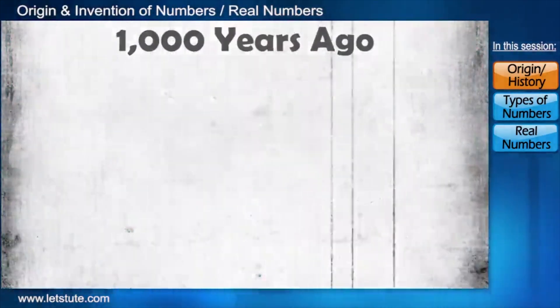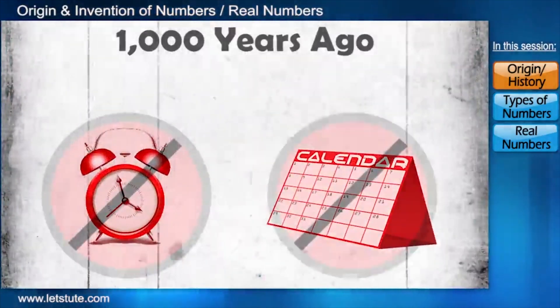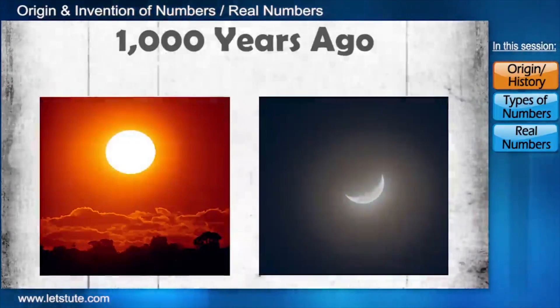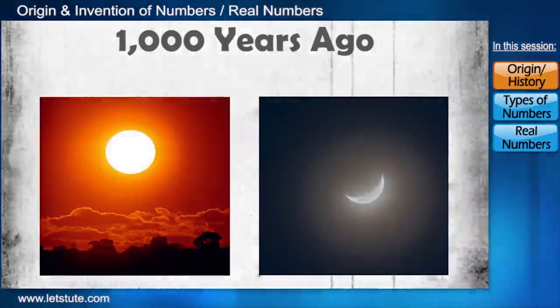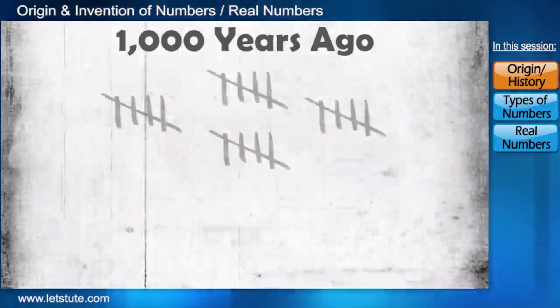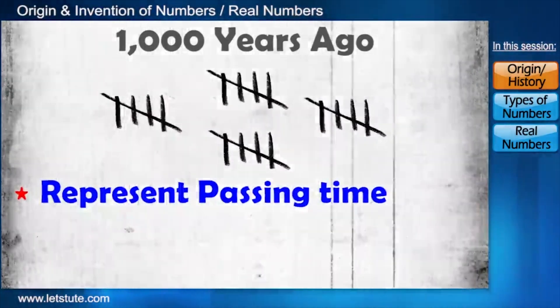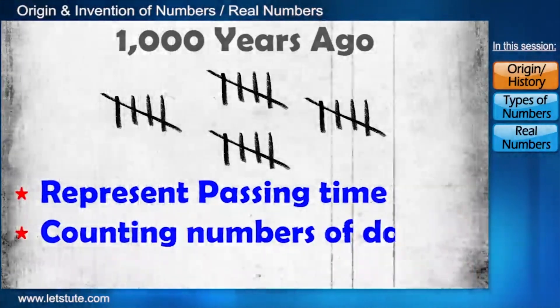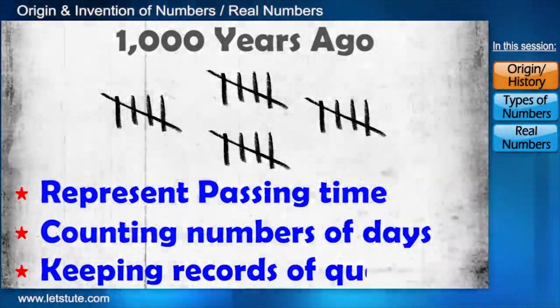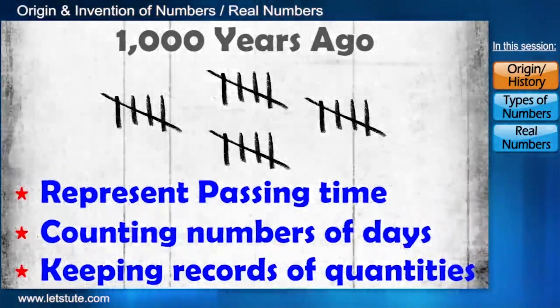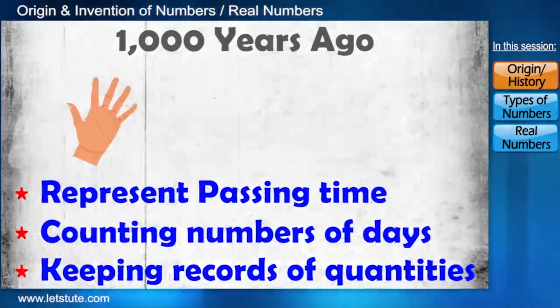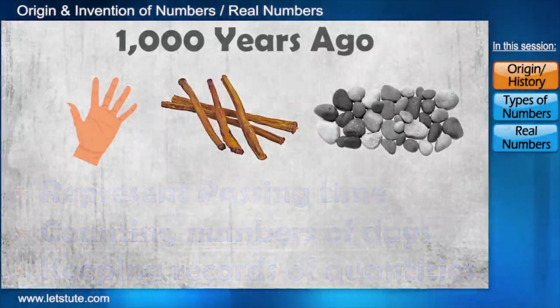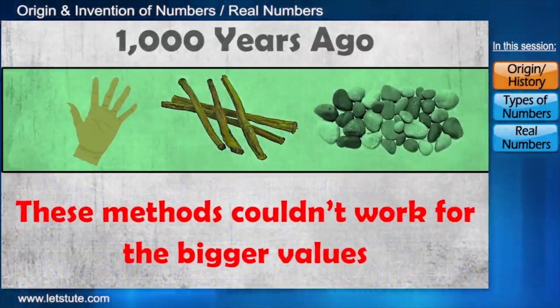Thousands of years ago, there were neither clocks nor calendars to keep track of time. The sun and moon were used to identify whether it's morning 10 or evening 5. People at that time used to carve tally marks to represent the passing time. These tally marks may have been also used for counting number of days or keeping records of quantities such as of animals. They were also known to be using fingers, sticks, rocks or stones to count the things. But these methods couldn't work for the bigger values.